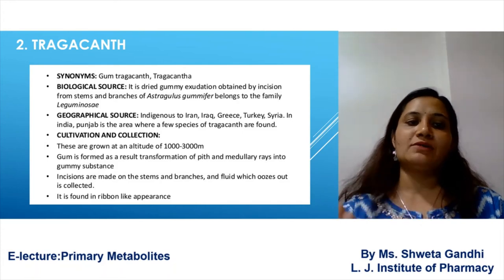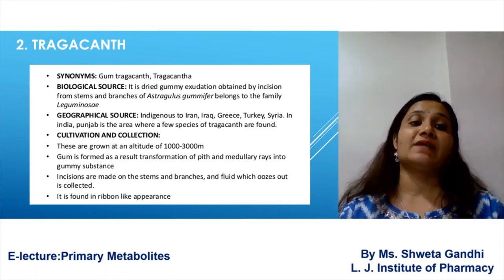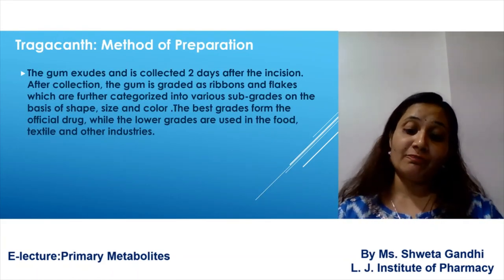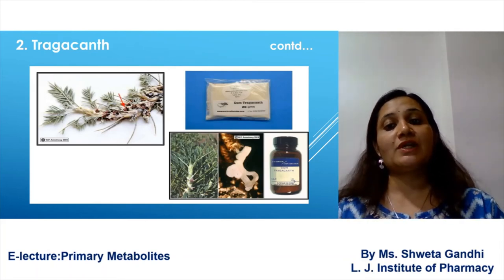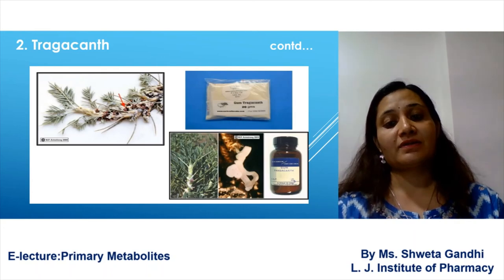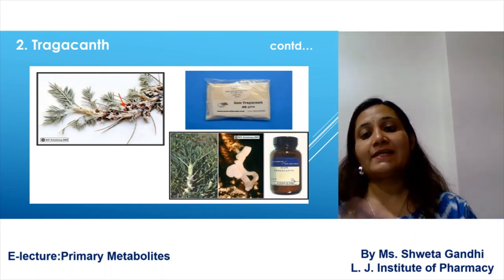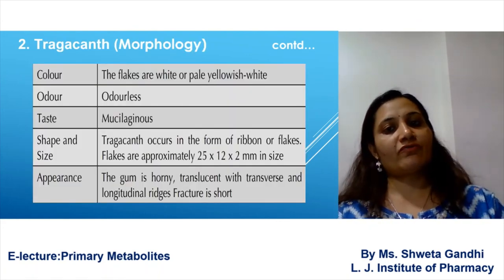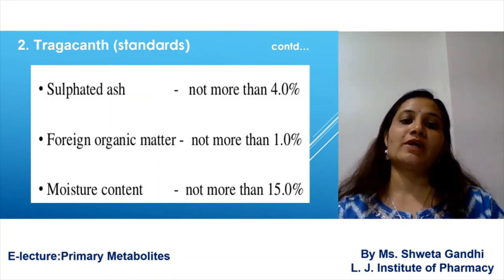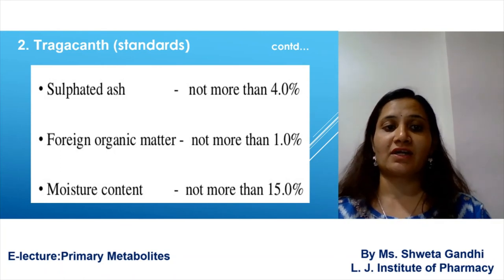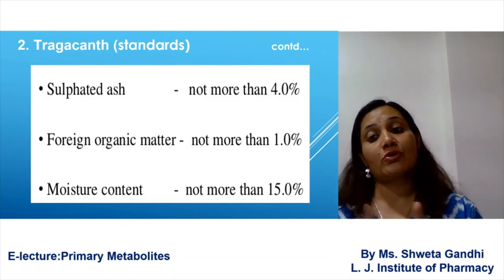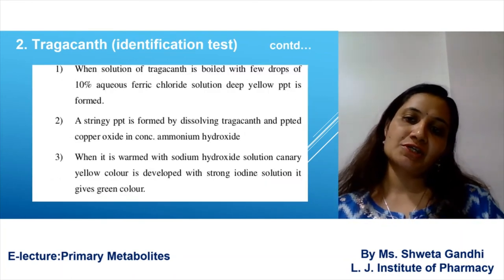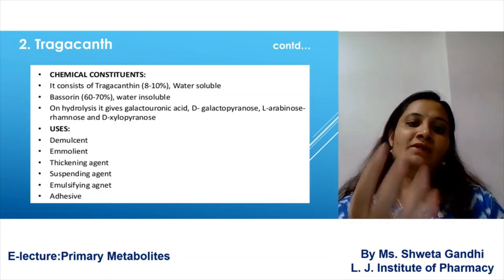The second drug is tragacanth. The biological source is the dried gummy exudation of Astragalus gummifer, family Leguminosae. You should know about the cultivation, collection, and method of preparation. You can see here a pictorial showing how the tragacanth plant looks, how the powder looks, and the final tragacanth gum formulations. The IP standards for tragacanth: sulfated ash should not be more than 4% for organic matter impurities. These are the identification tests used for tragacanth.